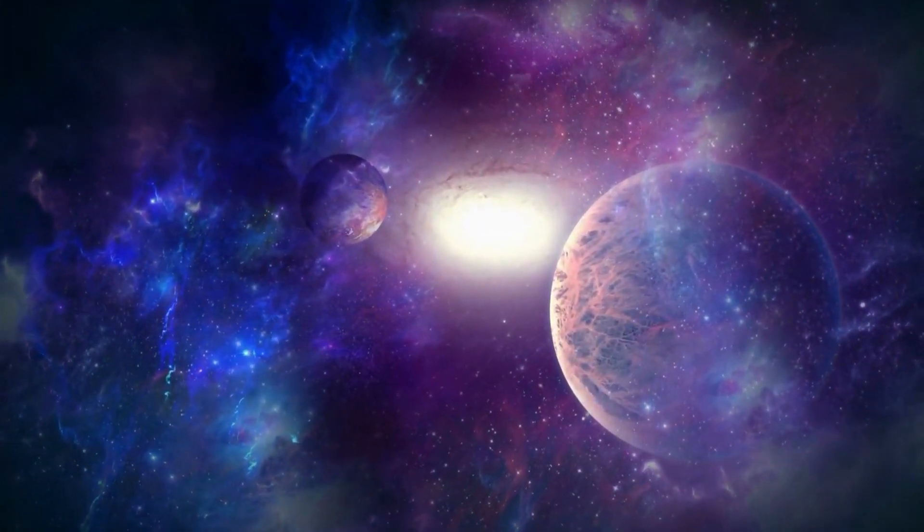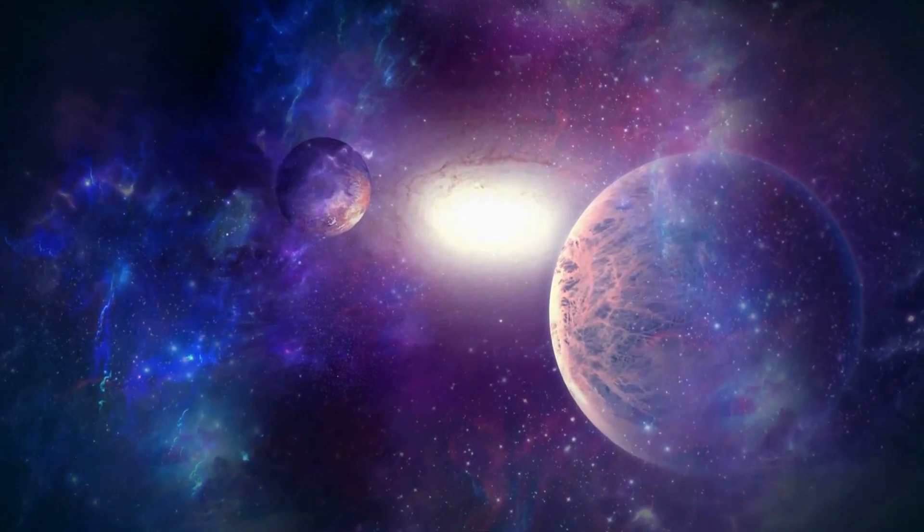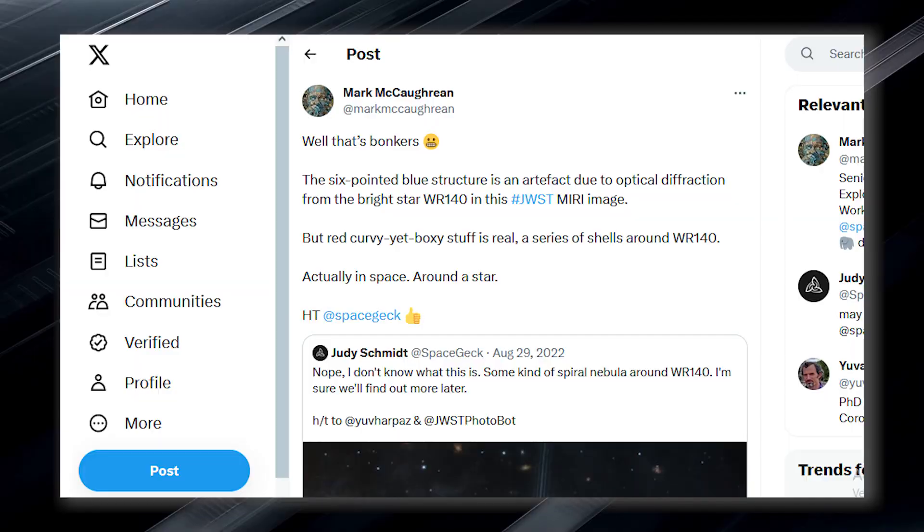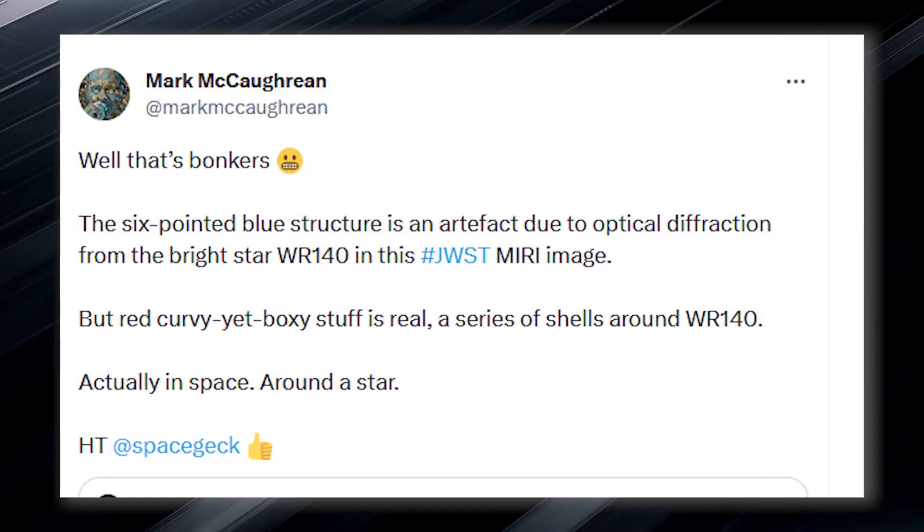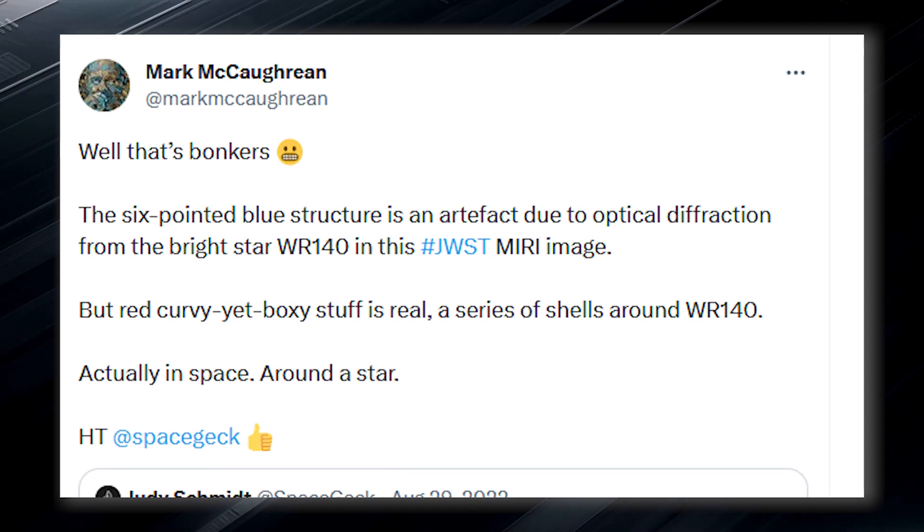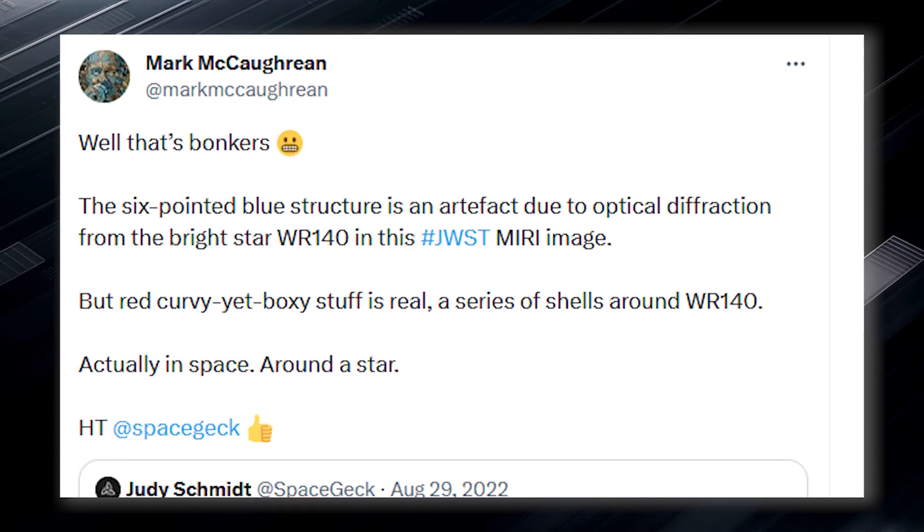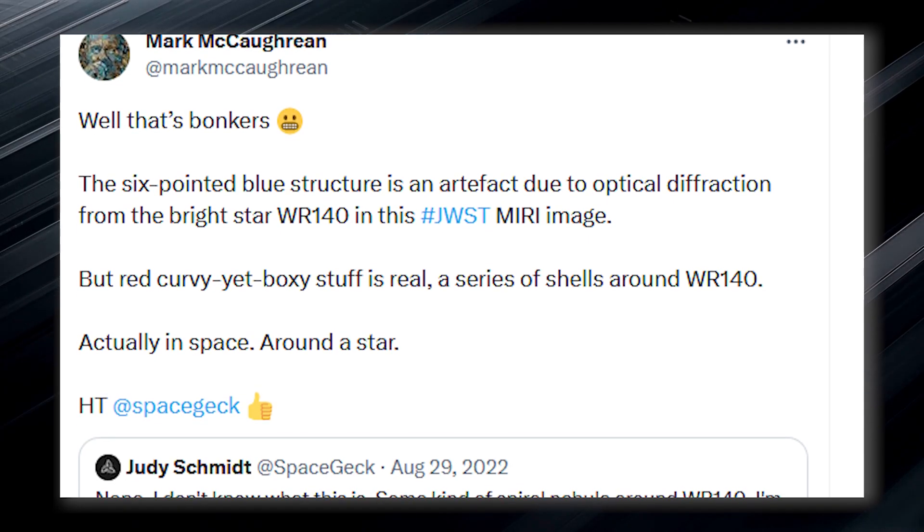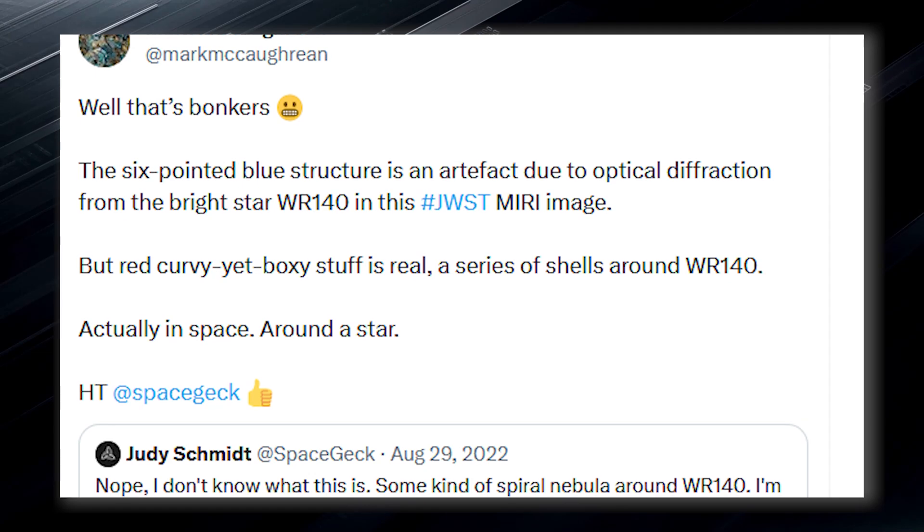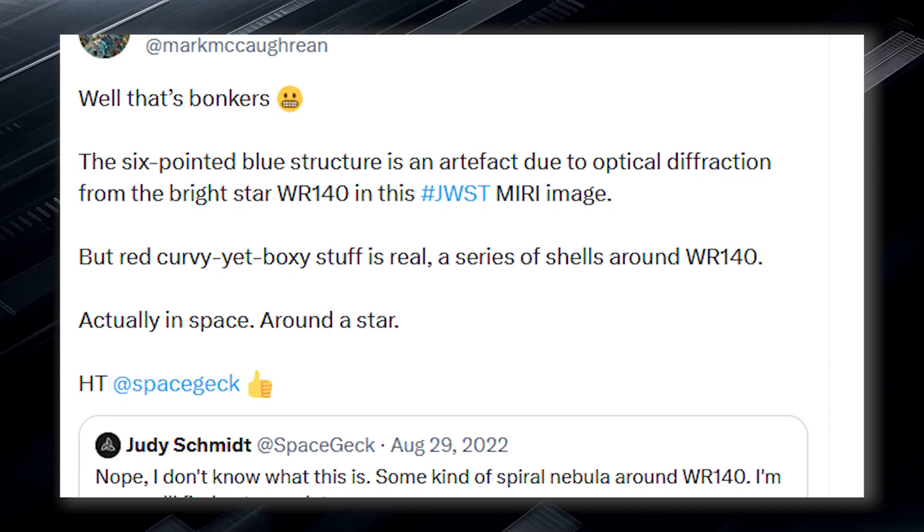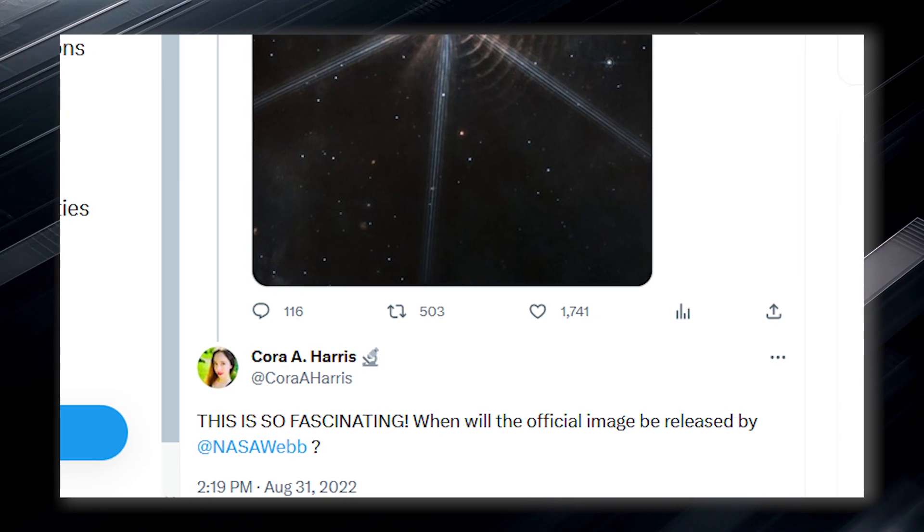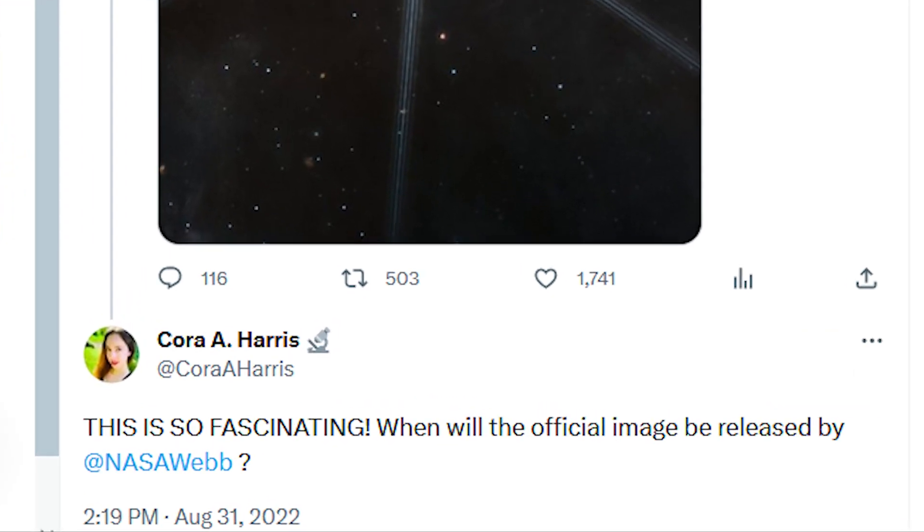Mark, an interdisciplinary scientist with JWST Science Working Group and a science advisor to the European Space Agency, called the feature wacky in a Twitter thread. He explained that the six-pointed blue structure is an artifact due to the optical diffraction from the bright star WR 140 in the image. However, he noted that the red curvature is real and represents a series of shells around WR 140 in space. Although NASA is expected to have something to say about this, it is expected to make a statement soon.